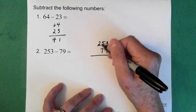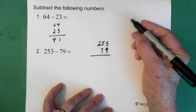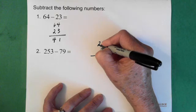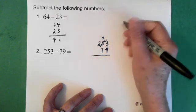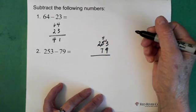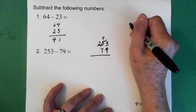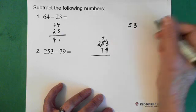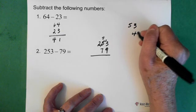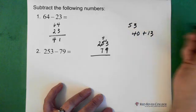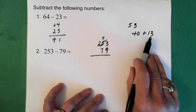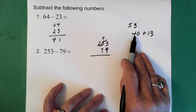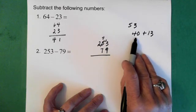So then what we do is we borrow from the 50. So we take a 10 from here and this becomes a 4. And we put that 10 with the 3, which gives us 13. So remember what we have here, we have 53. And we could say that's essentially 40 plus 13. And that's what we're doing.